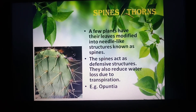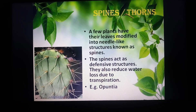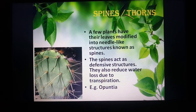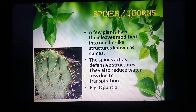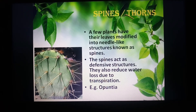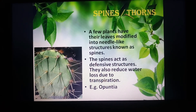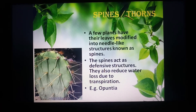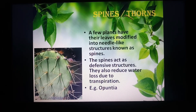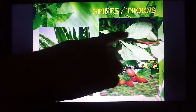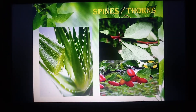The next modification is spines or thorns. Leaves of certain plants become wholly or partially modified for defense purposes, forming sharp pointed structures known as spines. These spines protect the plant from grazing animals and reduce water loss from the plant in the form of transpiration. Examples are opuntia and aloe vera, as well as barberry. You can see the spine of the barberry plant alongside its fruit, the berries.